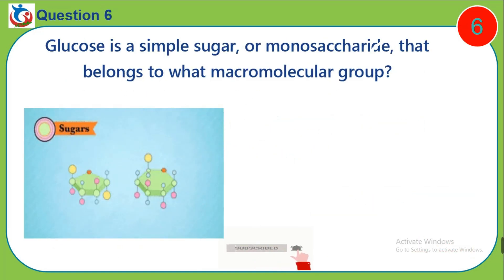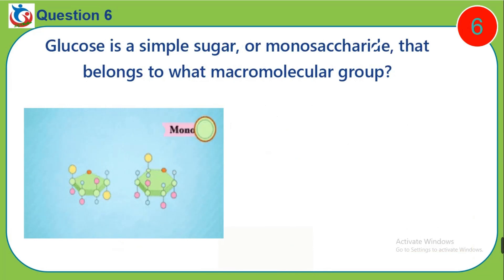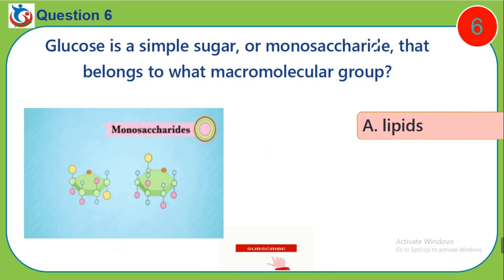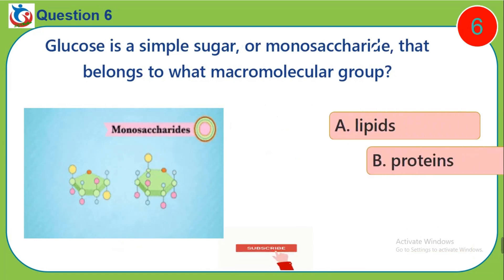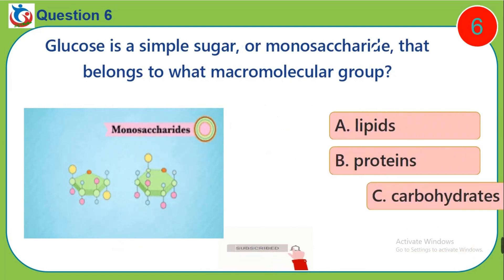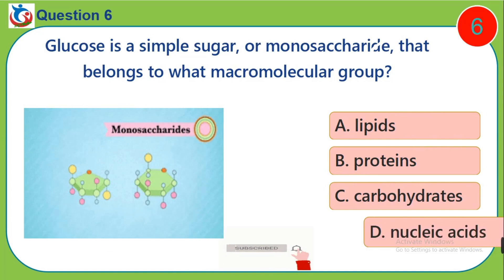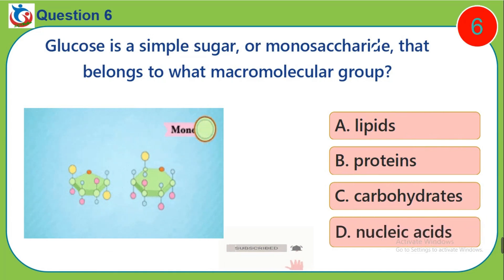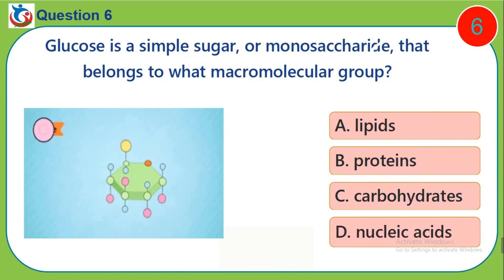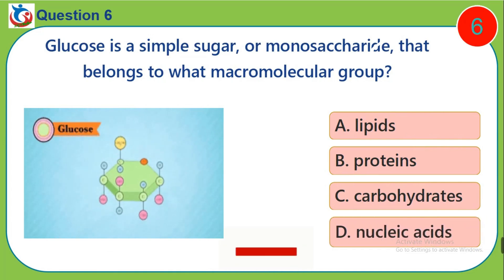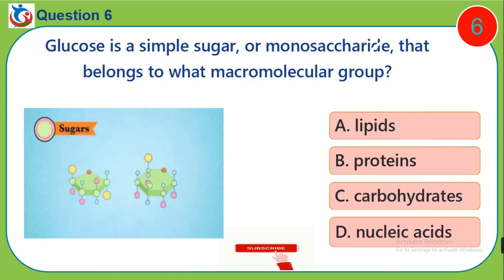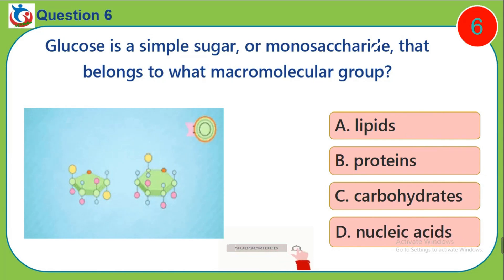Question 6. Glucose is a simple sugar or monosaccharide that belongs to what macromolecular group? A, lipids. B, proteins. C, carbohydrates. D, nucleic acids.